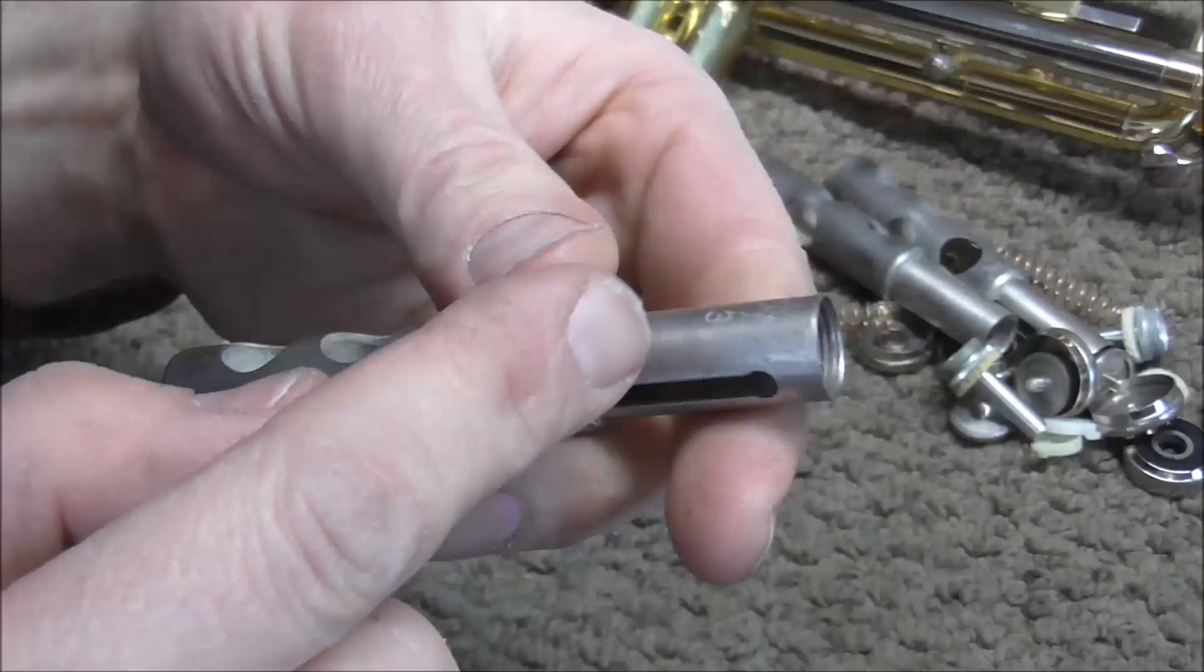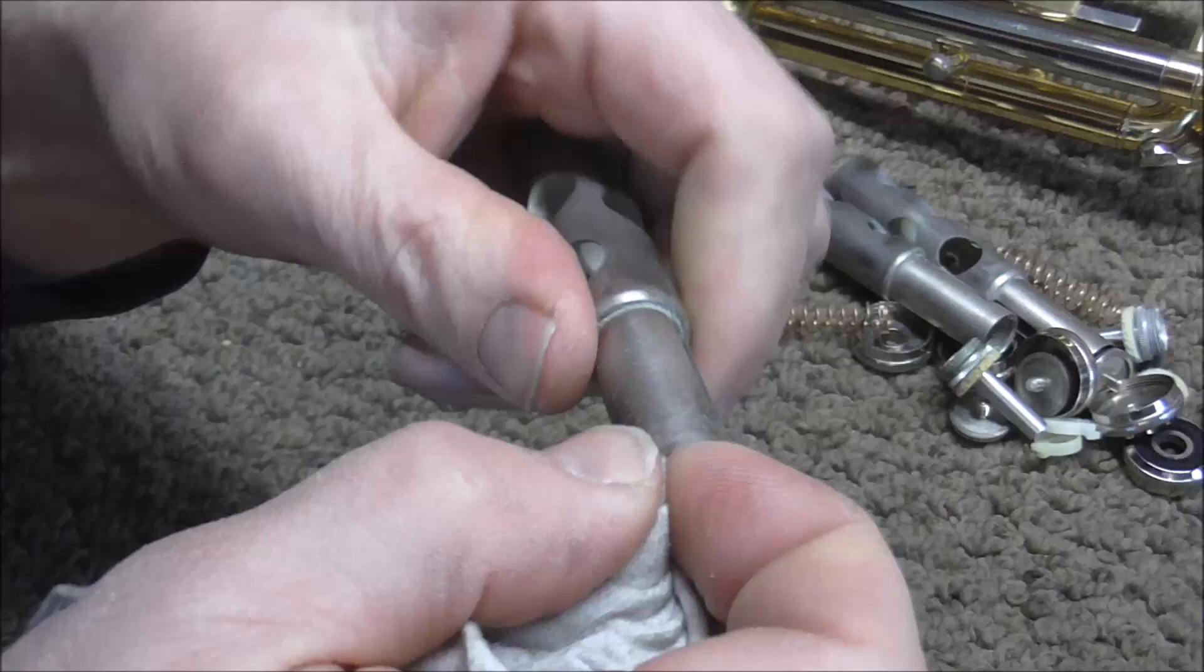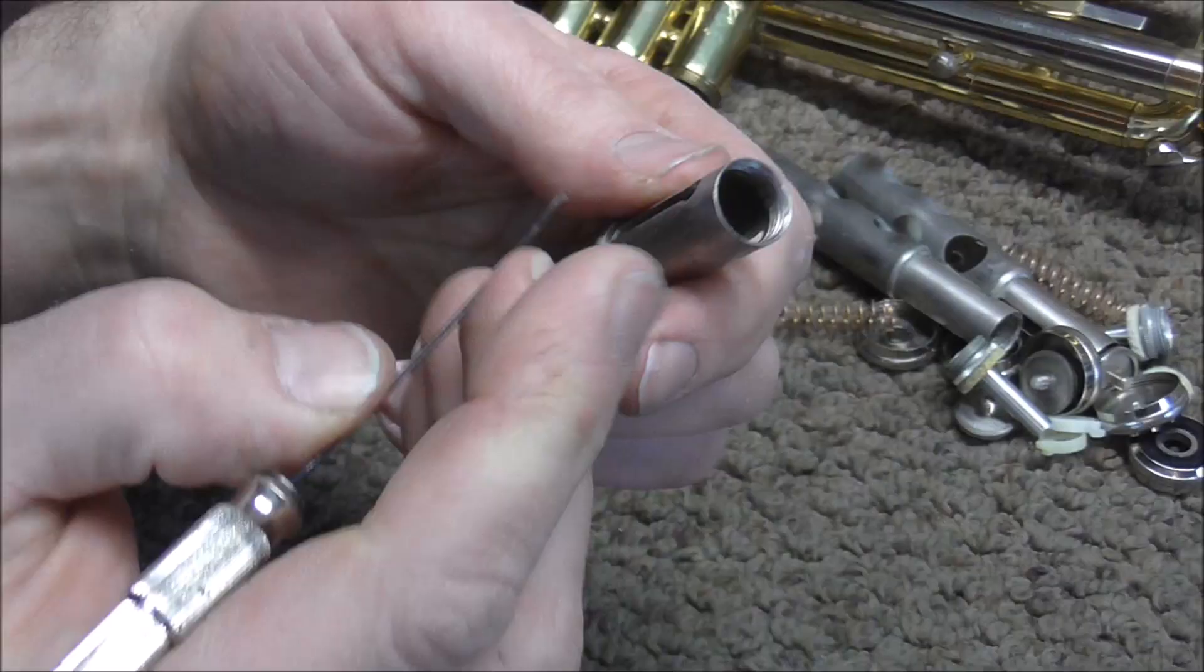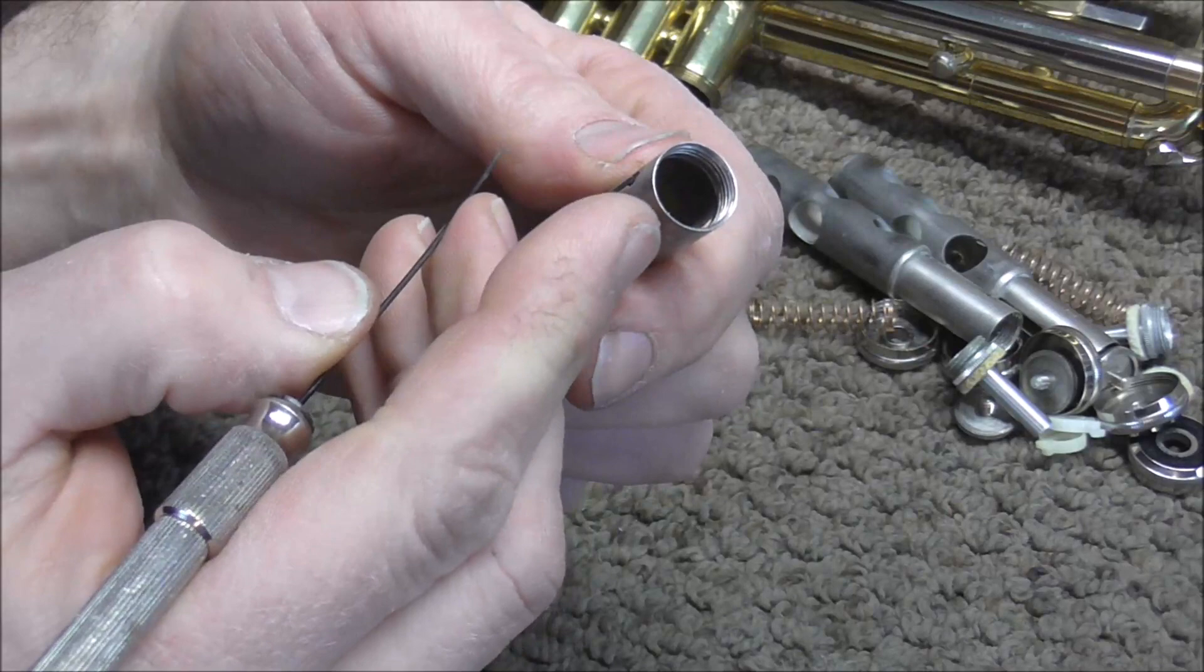You also need to clean up the inside of the threading on the valve because that gets a lot of corrosion on it too. Usually this part of the valve does not corrode but the corrosion from the valve stem gets onto that part of the valve. You may also need to clean up the threading with a poker.